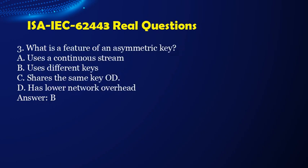Question 3. What is a feature of an asymmetric key? a. Uses a continuous stream. b. Uses different keys. c. Shares the same key. d. Has lower network overhead. Answer: b.